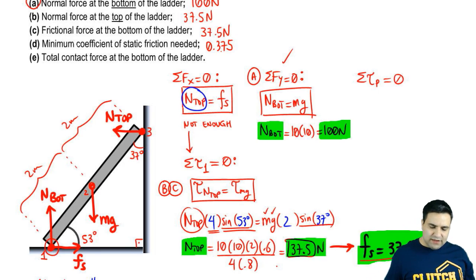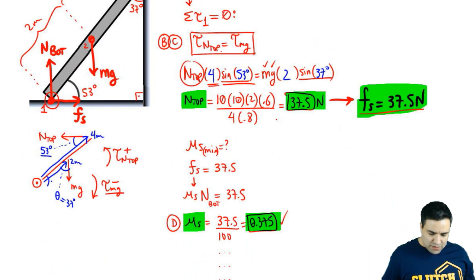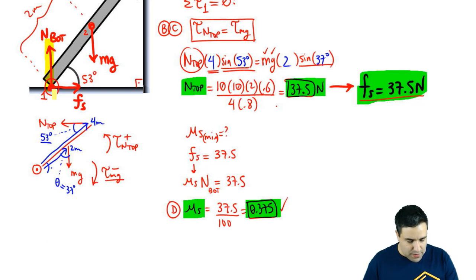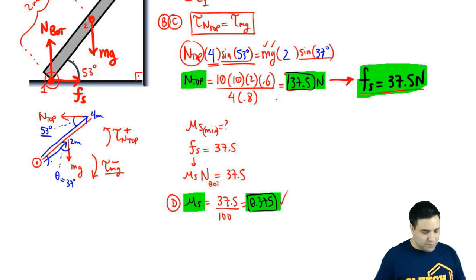And I want to know the total contact force at the bottom of the ladder. So what's the deal with that? Look at the bottom of the ladder. There are two forces, n bottom and friction static. So one thing you might be asked is for the total force, which is simply the vector addition between these two. So it's going to look something like this. Let me clean that up a little bit. And we're going to draw that out here. So the total contact force is just a combination of the two forces at the bottom.